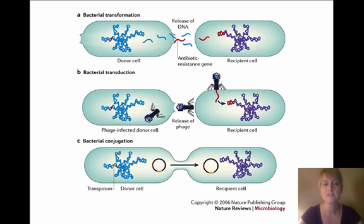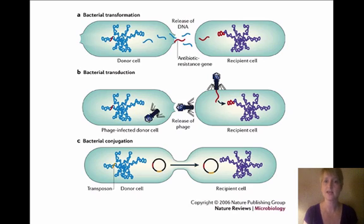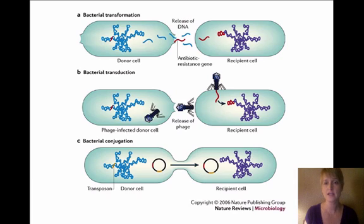The second method is bacterial transduction, where a phage — a virus that has infected the bacteria cell — picks up some of the DNA, is released from the cell, and when it infects another cell it leaves some of that DNA behind. Then there's bacterial conjugation, where two cells get very close, their cell membranes fuse, and part of the DNA moves from the donor cell into the recipient cell.